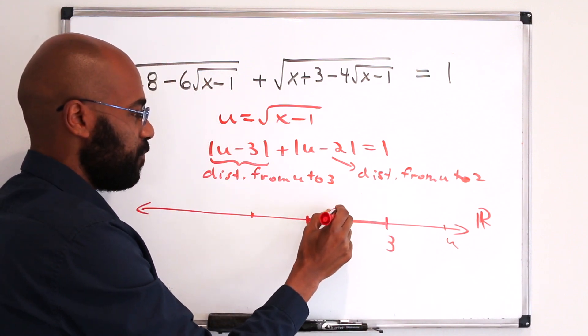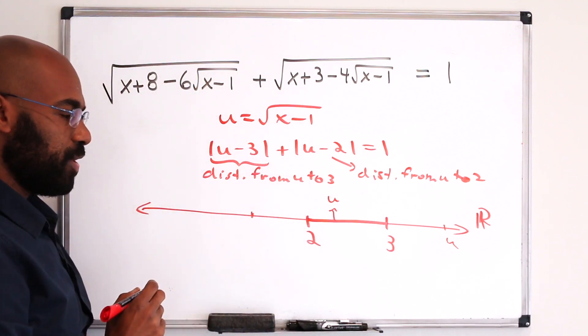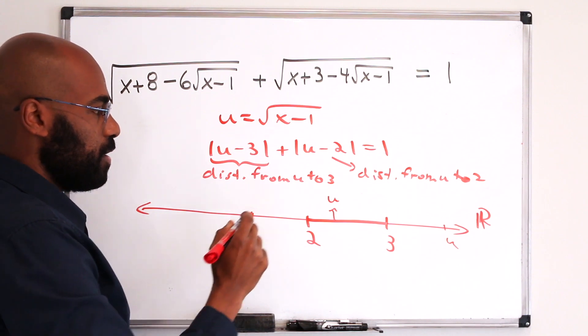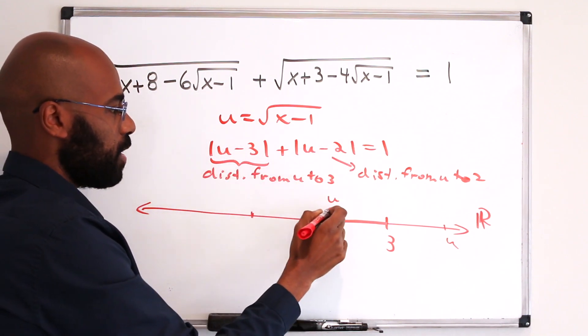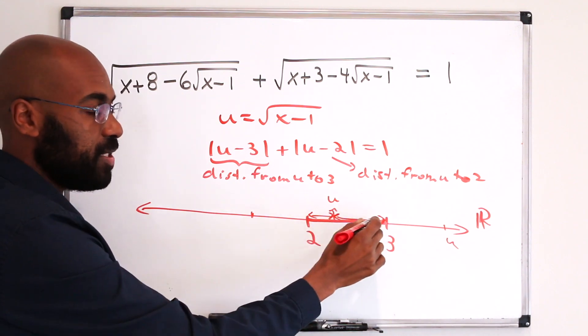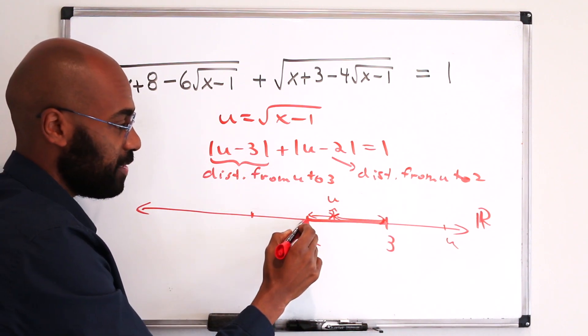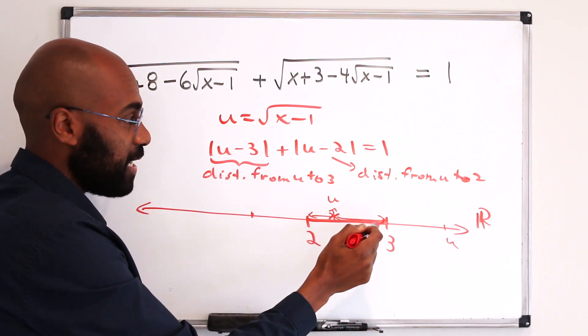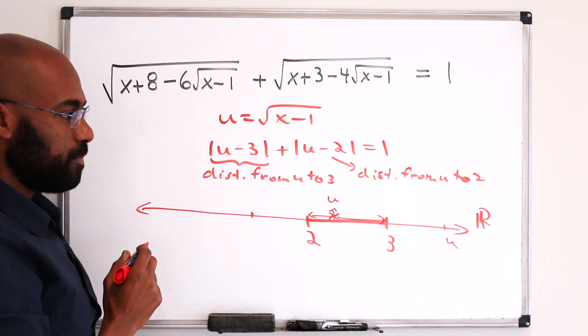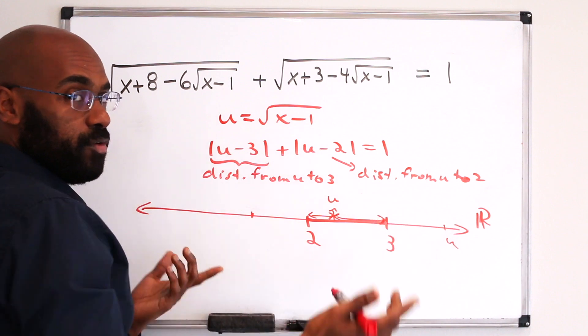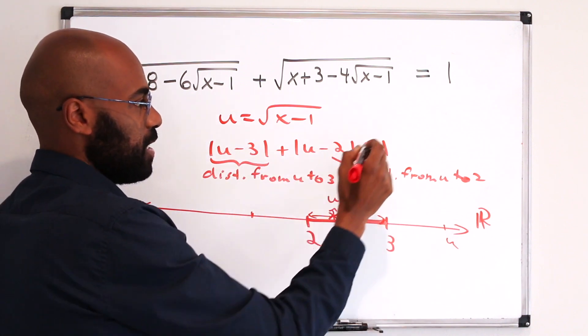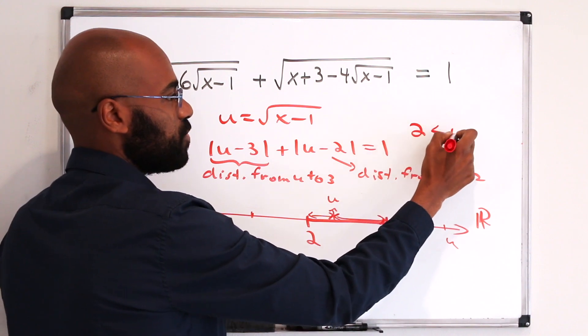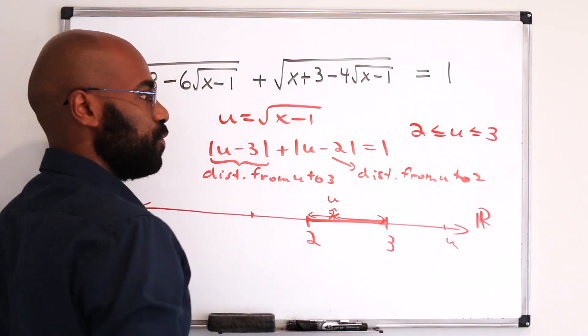Now say we pick a value of u randomly in here. Let's say u is right over here. Then this quantity is this distance here, and this quantity is this distance here. But the sum of these two distances is actually the length of this entire interval. So if u is inside here, it satisfies this equation. And when u is outside of the interval, it doesn't. So the complete solution set to this equation is actually all real values of u that are between 2 and 3.